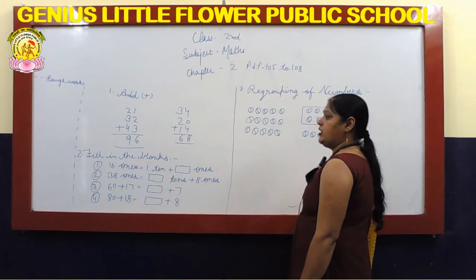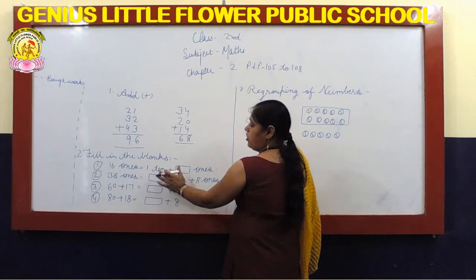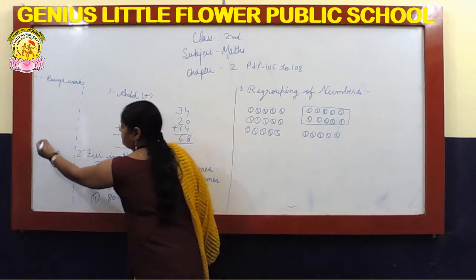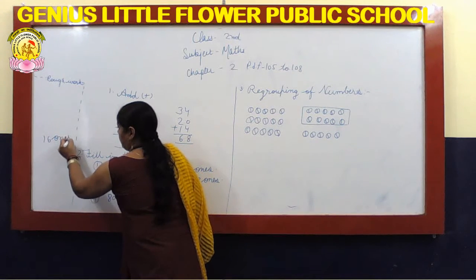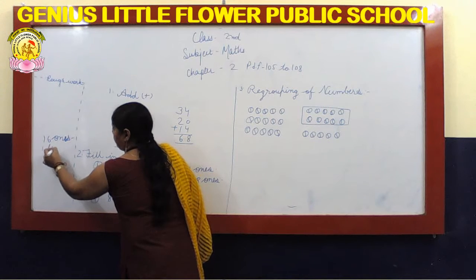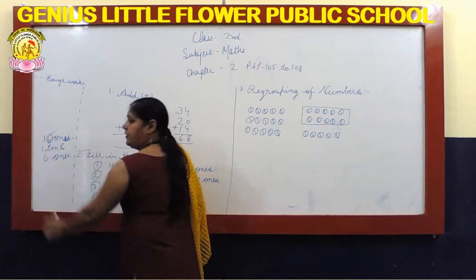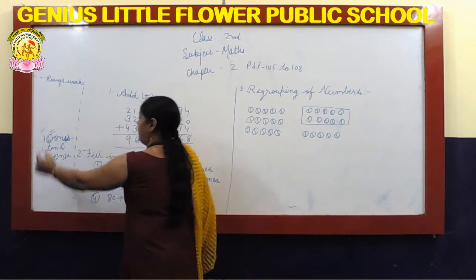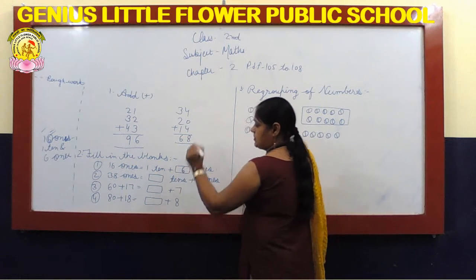Let's move to question 2. Fill in the blanks. 16 ones is equal to 1 ten and 6 ones. 6 kahan hai? Unit place par, 1s place par — 6 ones. 1 ten plus blank mein kya hoga? 6 ones.